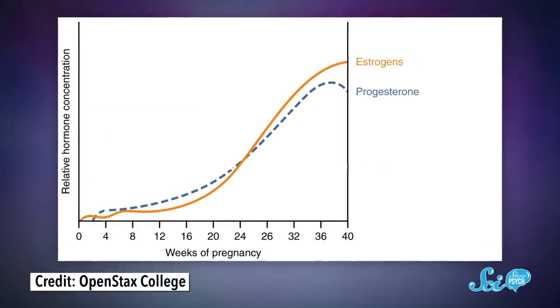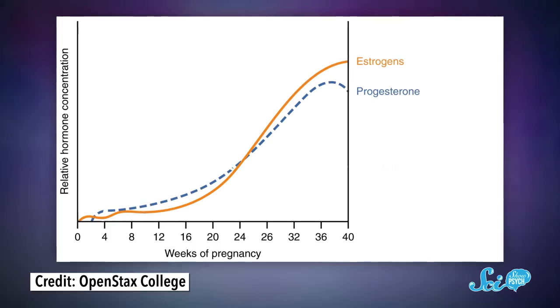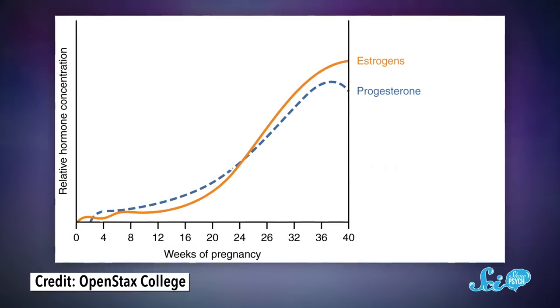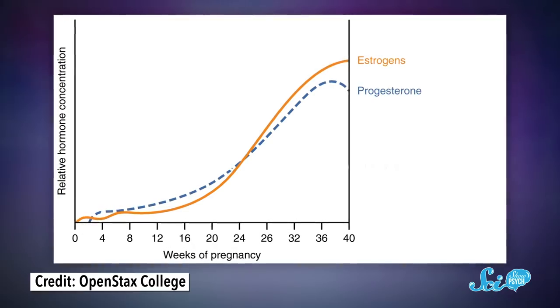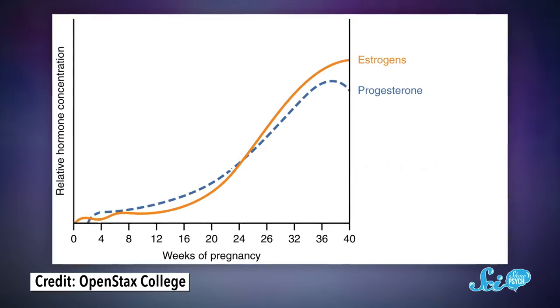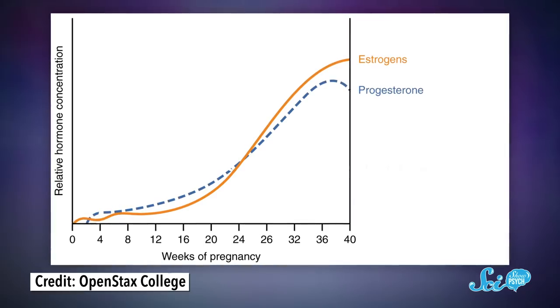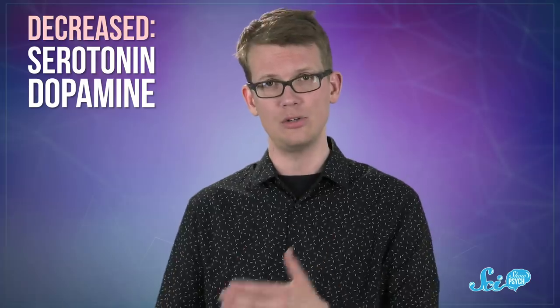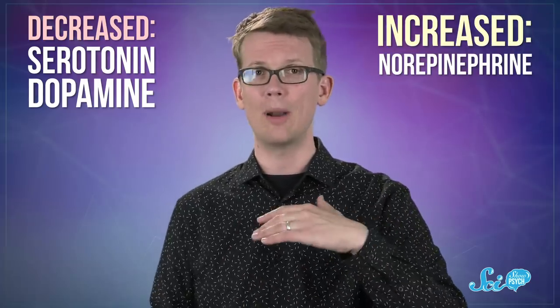During pregnancy, brain changes are ultimately driven by sex hormones like estrogen, progesterone, and prolactin. These hormone levels rise to super-high concentrations during pregnancy, and fluctuate a lot during the third trimester. As this happens, the amount of some neurotransmitters also changes, including a decrease in serotonin and dopamine, and an increase in norepinephrine. That norepinephrine boost, which signals the fight-or-flight response, is also linked to increased memory loss.